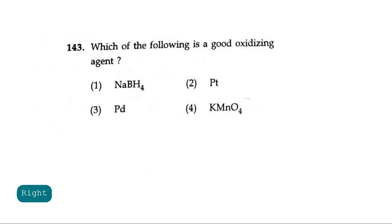Question 143: Which of the following is a good oxidizing agent? NaBH4, platinum, palladium or potassium permanganate. NaBH4 is a very strong reducing agent, so option 1 is not right. The second one is platinum. Platinum will give platinum 2+ by losing its electrons. Platinum 2+ is very less stable, so we won't consider it to be a very good oxidizing agent. Palladium is also a reducing agent. Potassium permanganate is a very good oxidizing agent. The correct answer is option 4.